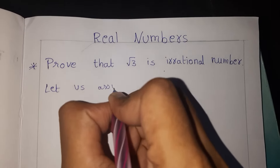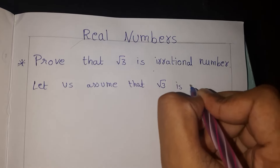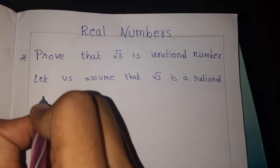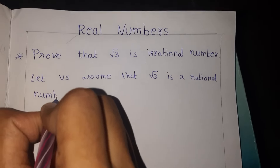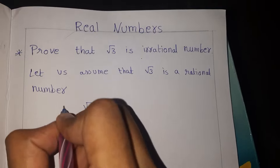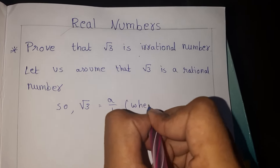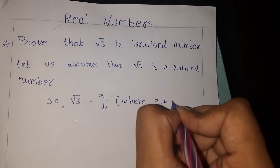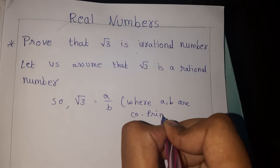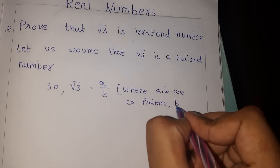Let's assume that root 3 is a rational number. So root 3 is equal to a by b, where a and b are co-primes — meaning they have no common factor except 1 — and b is not equal to 0.